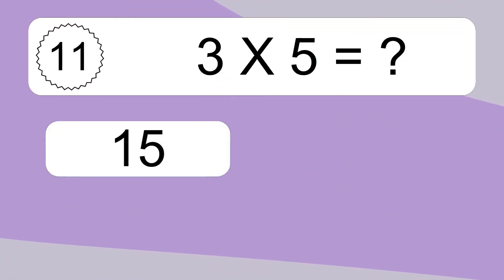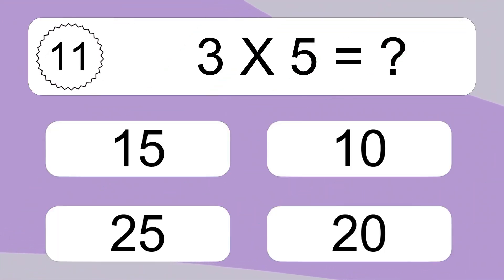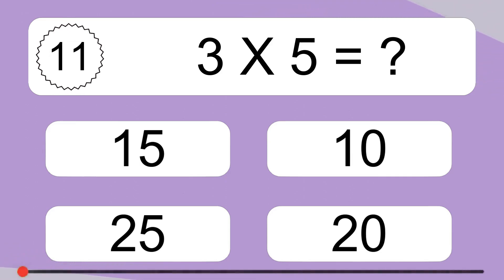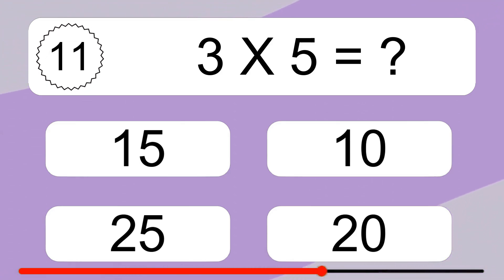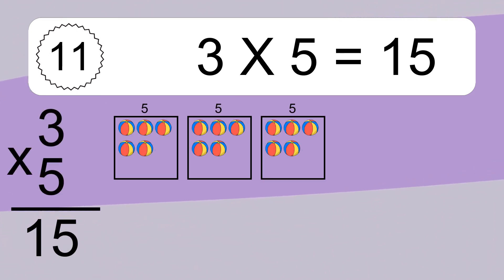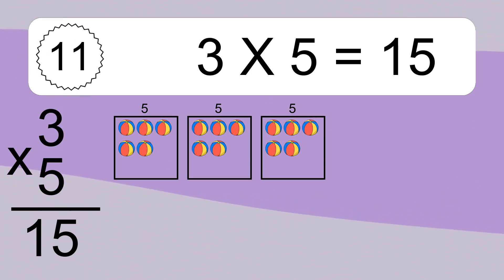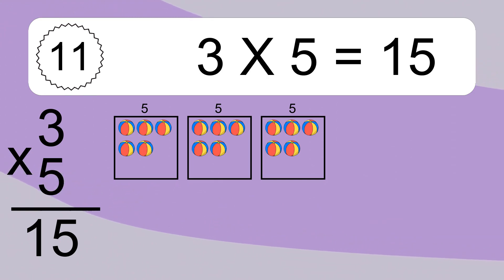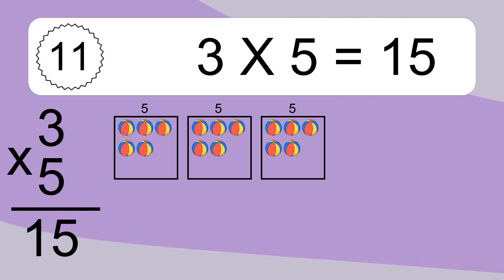3 times 5 equals what? 3 times 5 equals 15. We have 3 boxes, and each box has 5 colorful balls inside.